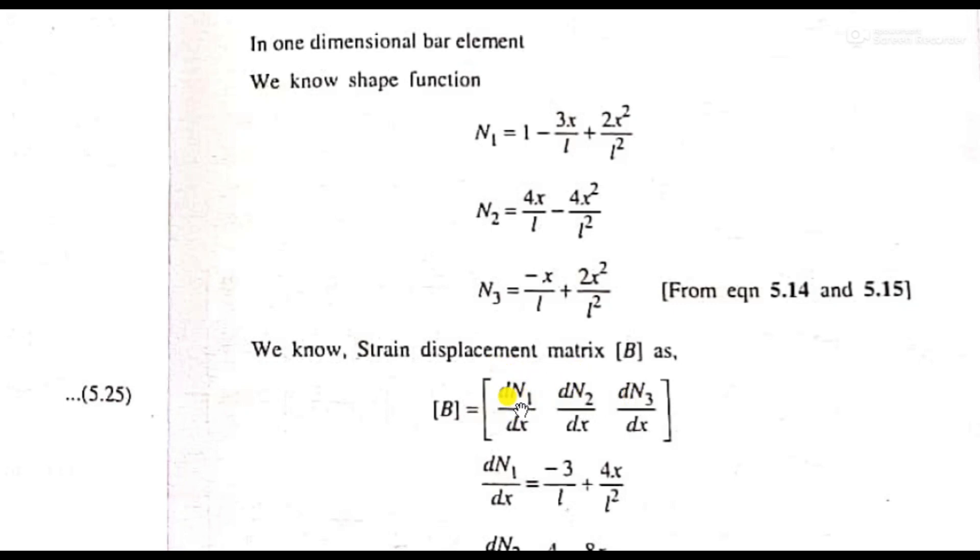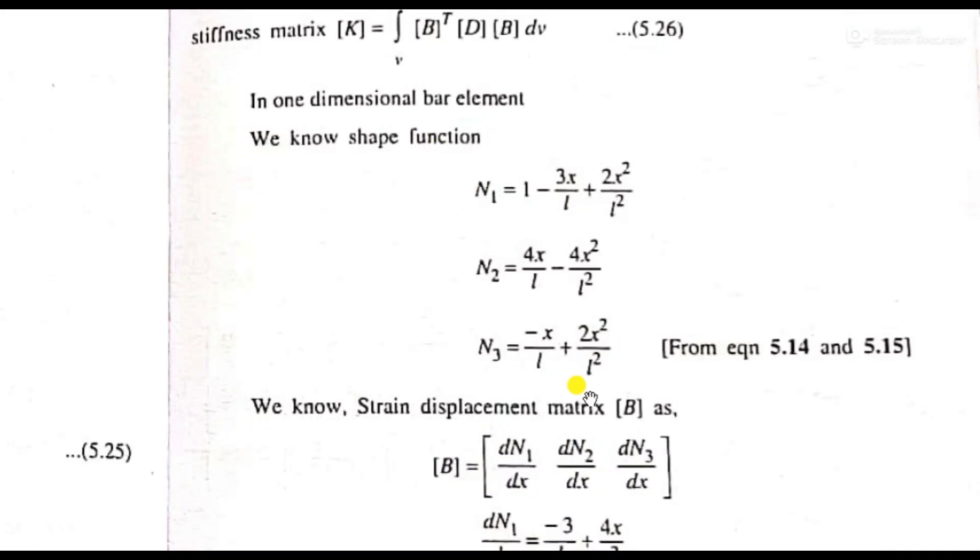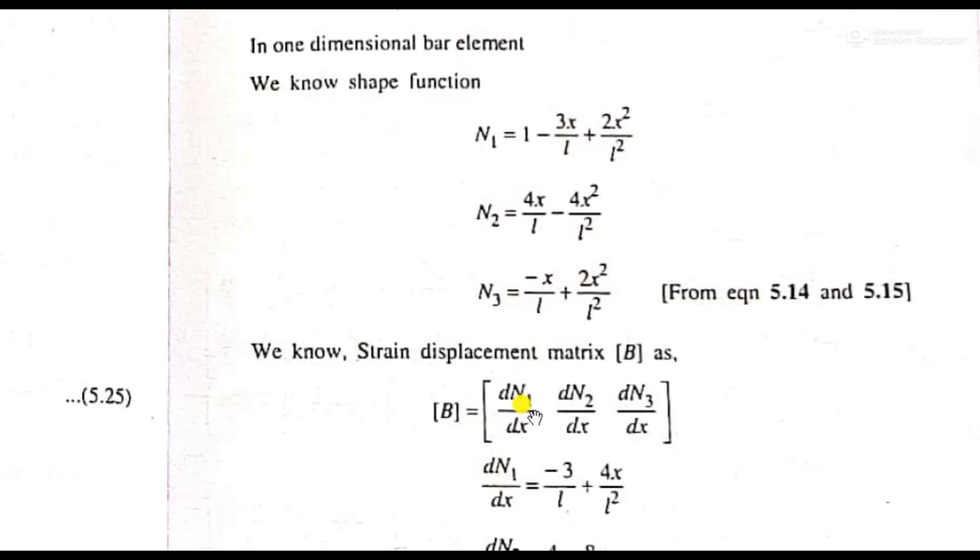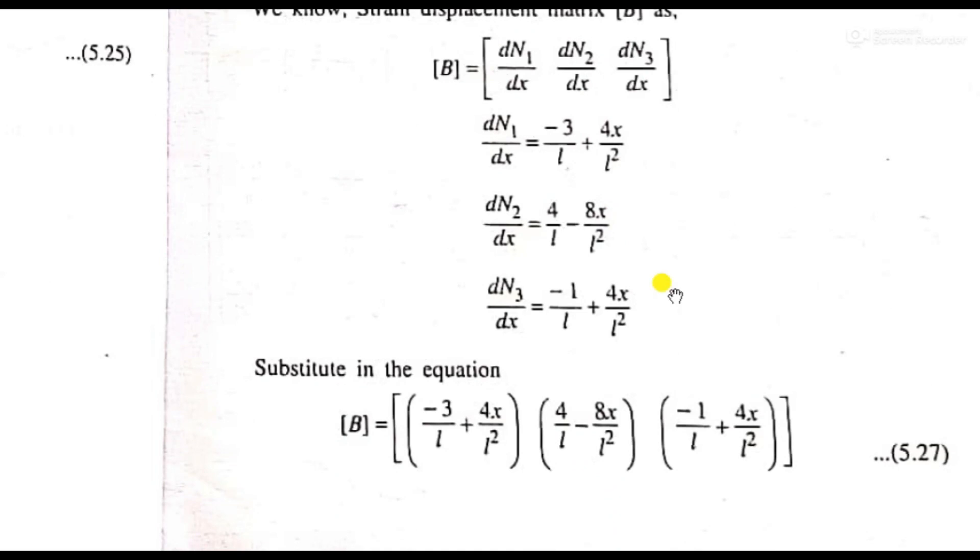This is the shape function we already discussed. N1 is equal to -x/L + 2x²/L², N2 is equal to 4x/L - 4x²/L², and N3 is equal to -x/L + 2x²/L². This is a question in our syllabus. Now we can start with the derivatives. The derivative is with respect to x. We arrange matrix B as the derivative of the shape functions.